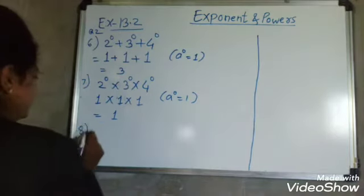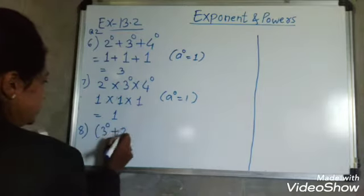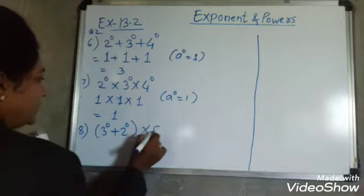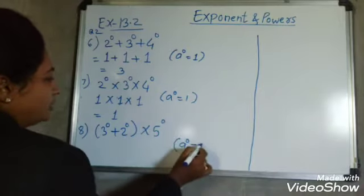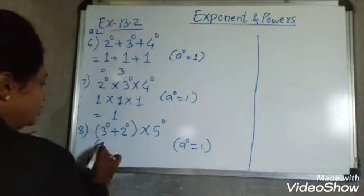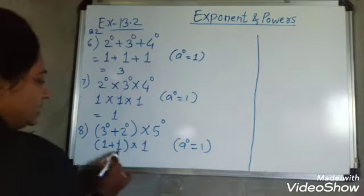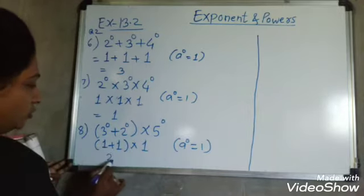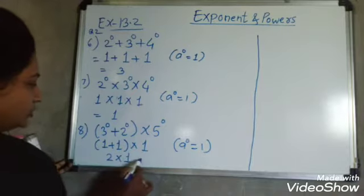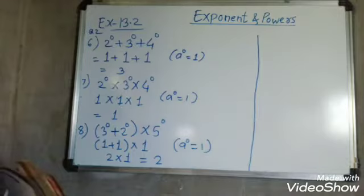Now our 8th example: 3 raised to 0 plus 2 raised to 0, whole multiplied by 5 raised to 0. Using the same formula A⁰ = 1, and remembering to solve the bracket first: 3⁰ = 1, plus 2⁰ = 1, gives 2 inside the bracket. Then 2 multiplied by 5⁰ = 1 outside, so the answer is 2. In all three examples 6, 7, and 8, we used the same formula: A raised to 0 is equal to 1.